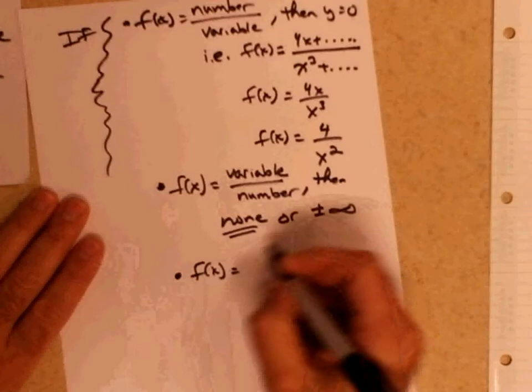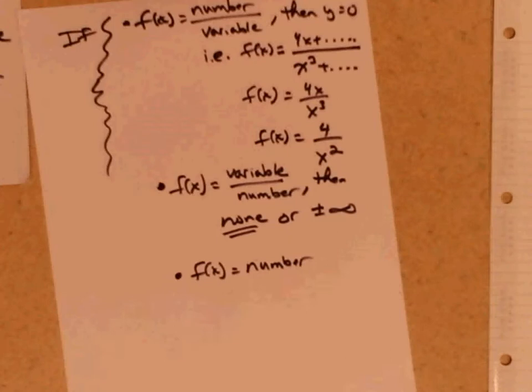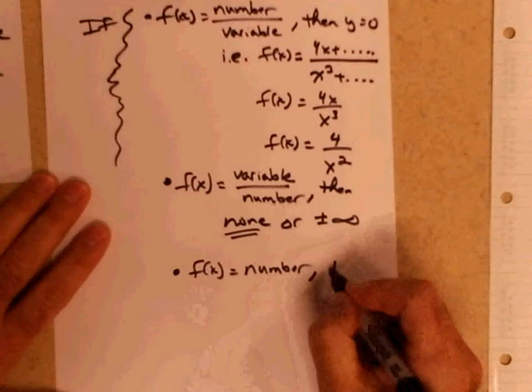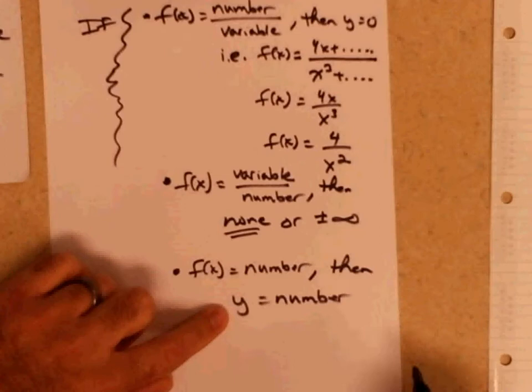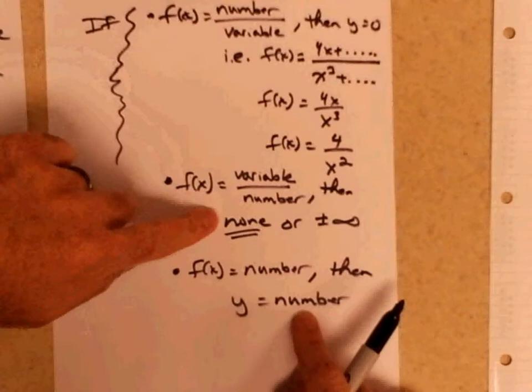The third condition: if you have f(x) and the variable terms cancel out and you're left with just some number, then y equals whatever that number happens to be. So you have a horizontal asymptote. Two conditions give you y equals zero or some number, and one condition gives you no horizontal asymptote.